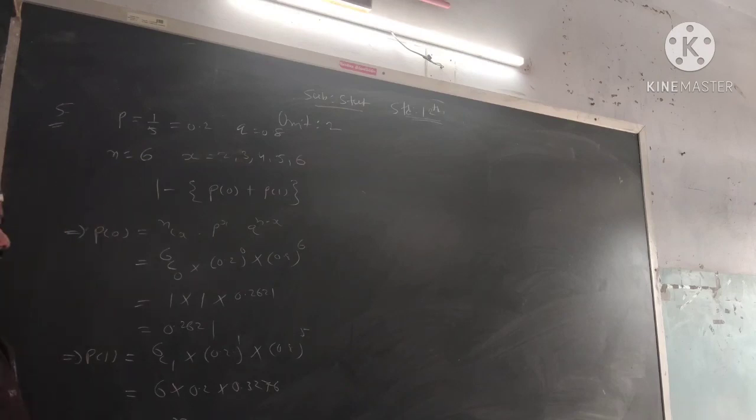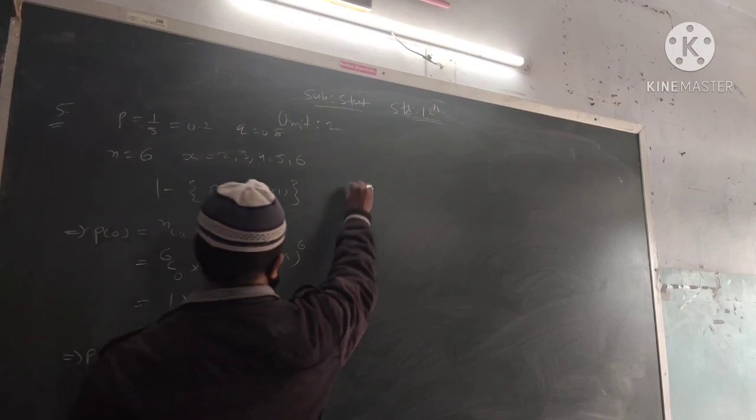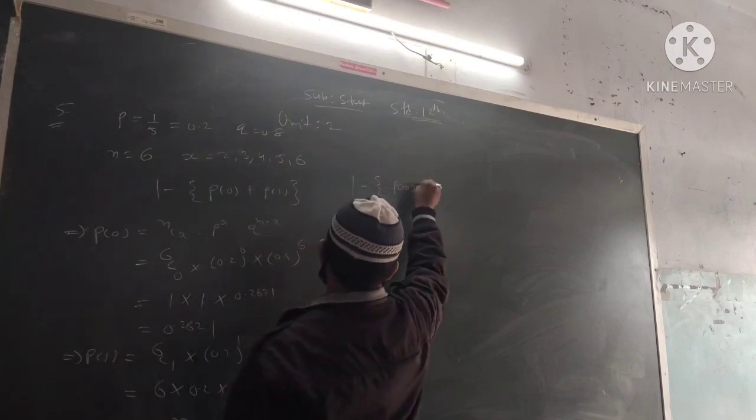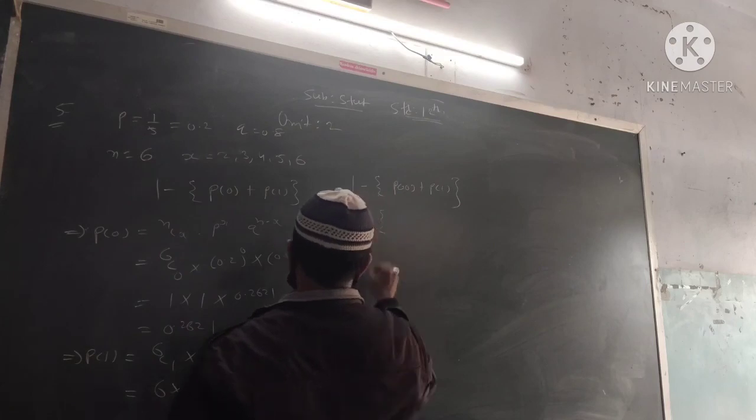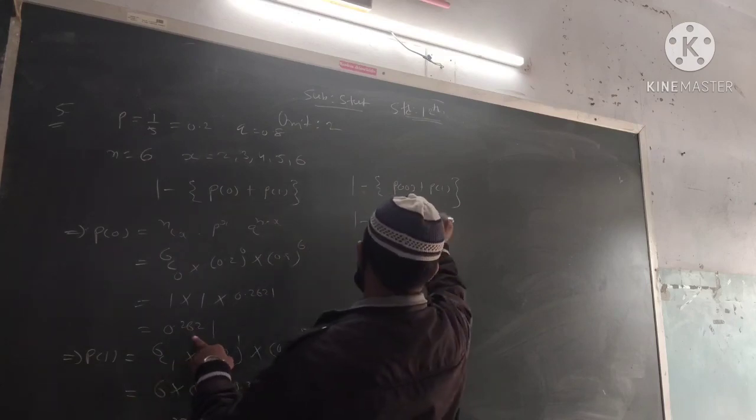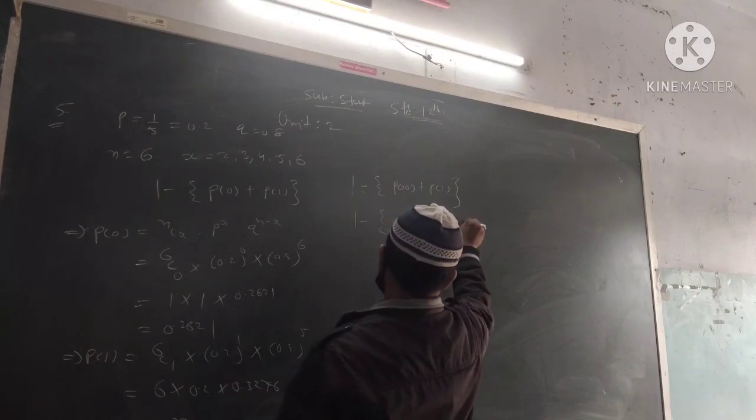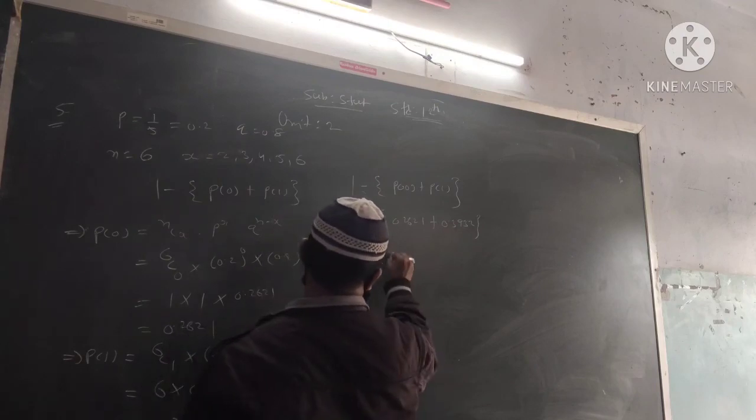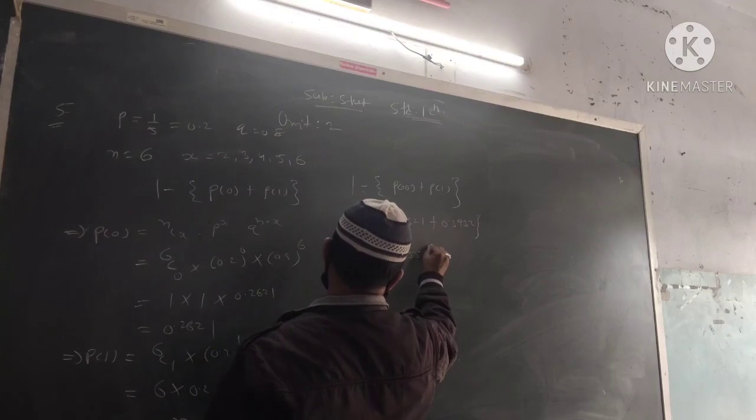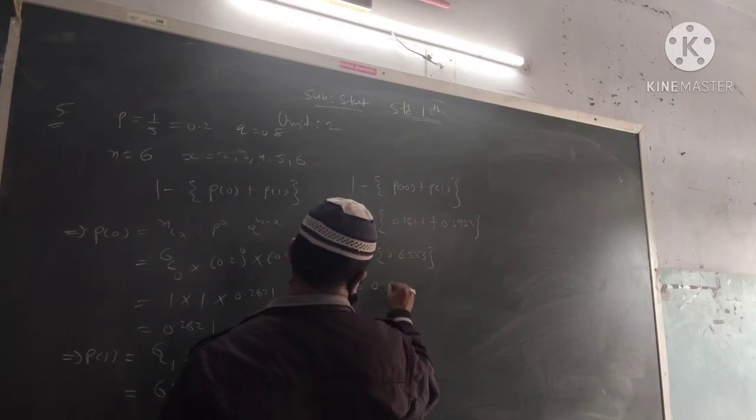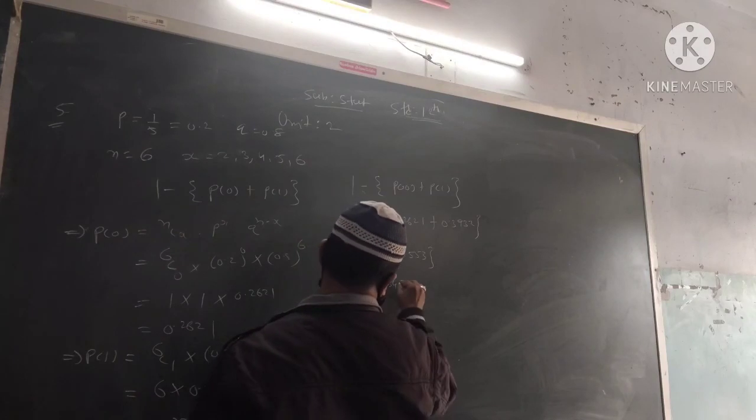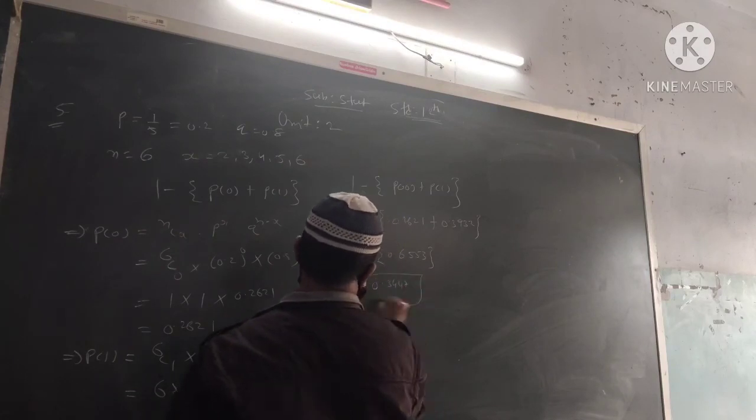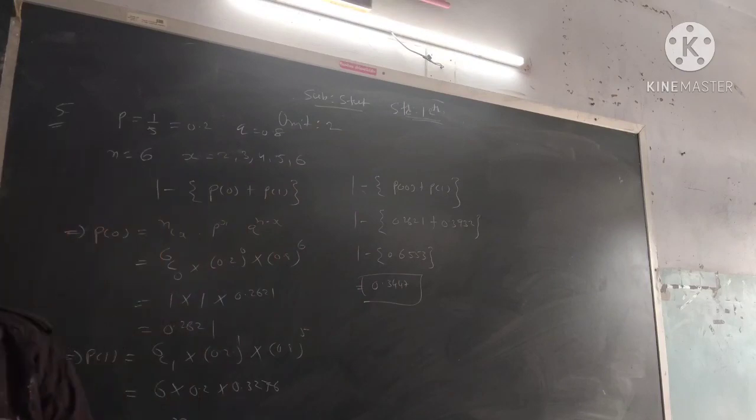Now we need to find 1 minus P(0) minus P(1). That is 1 minus 0.2621 minus 0.3932. Adding P(0) and P(1) gives 0.6553. So 1 minus 0.6553 equals 0.3447, which is our answer.